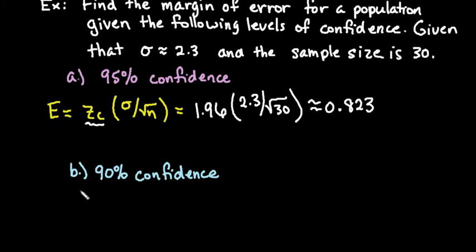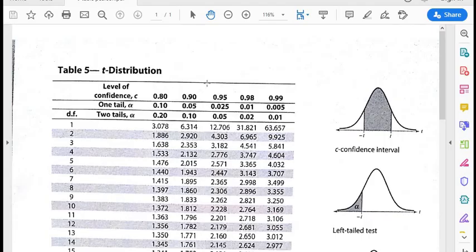For this one we're still using the exact same formula. The only thing that changes is our z-score. For this one we're going to look for 90% confidence. Let me go ahead and pull up my table.